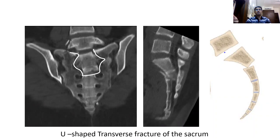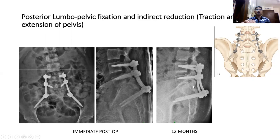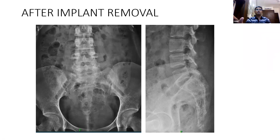Coming to our case: this patient had a U-shaped transverse fracture of the sacrum and was treated by posterior lumbopelvic fixation, given her neurological deficit and fracture displacement. The fracture was reduced by an indirect reduction maneuver — extending the pelvis and hip joint to produce reduction forces through the lateral intact sacrum. Pedicle screws were placed at L4 and L5 with iliac screws on either side. The immediate post-operative radiograph and 12-month follow-up show the fracture is fully healed. Despite some kyphosis at the fracture level, she had no poor functional outcomes from it. At 12 months, the implant was removed to retain lumbosacral mobility, followed by spinal strengthening exercises.